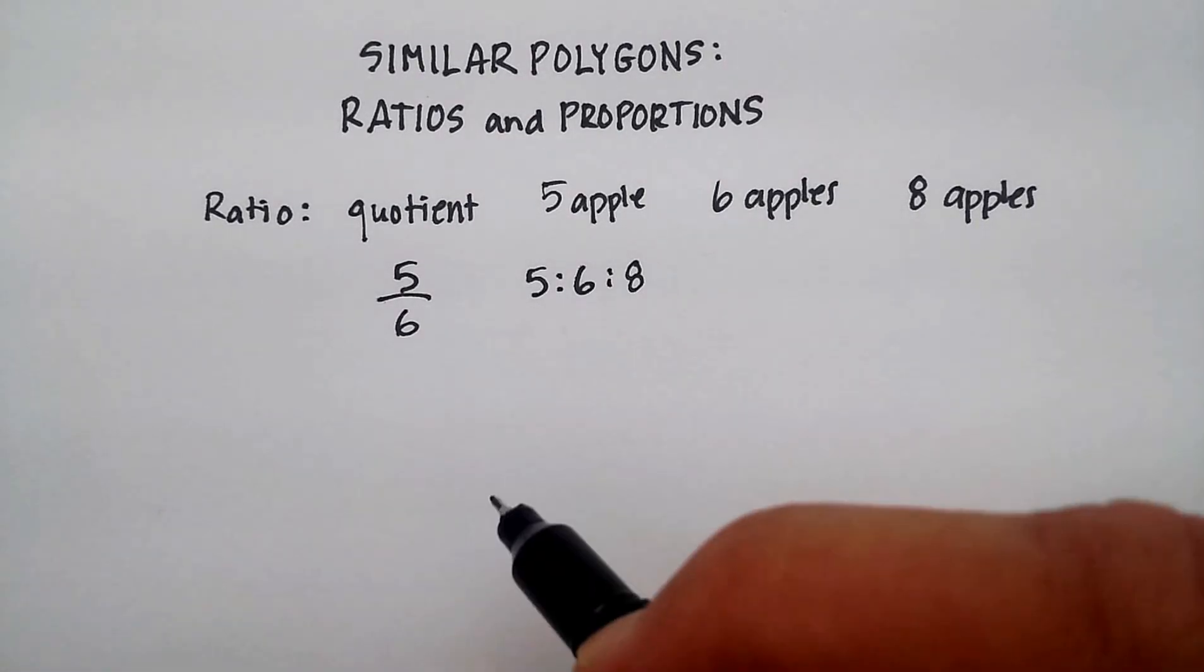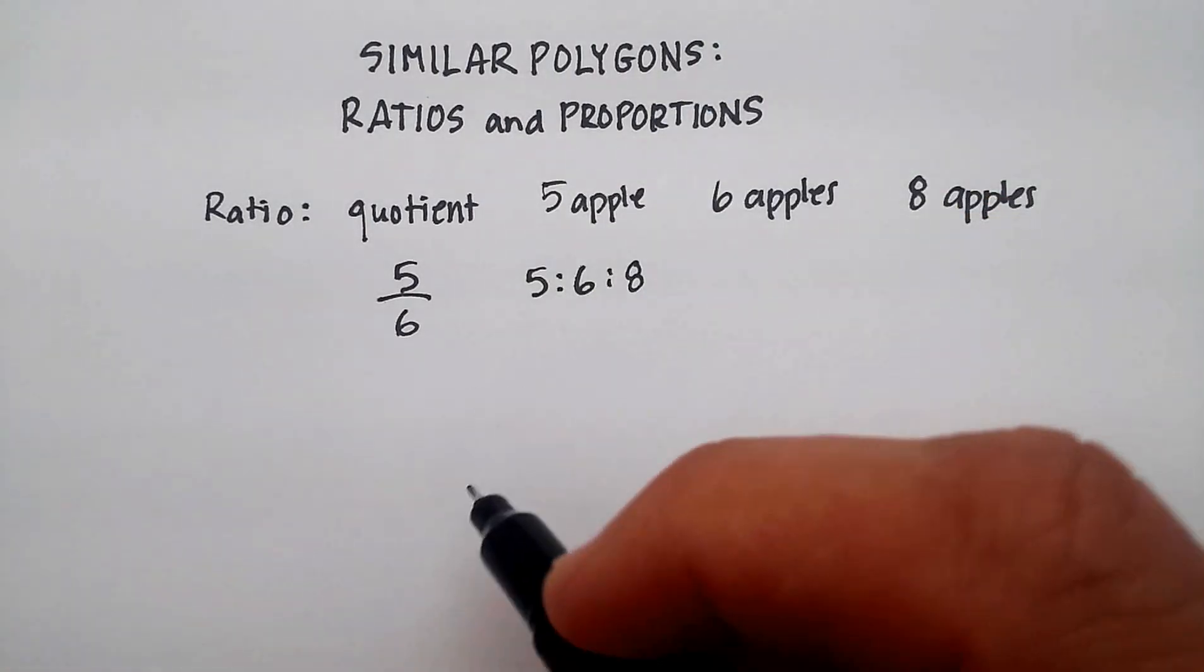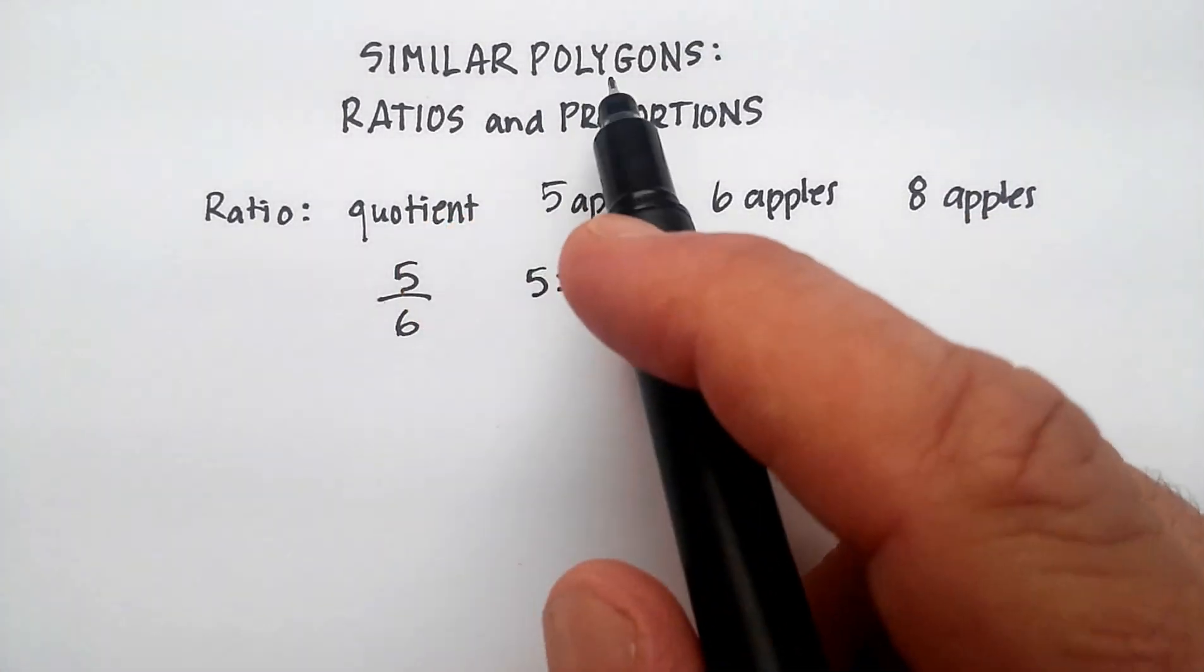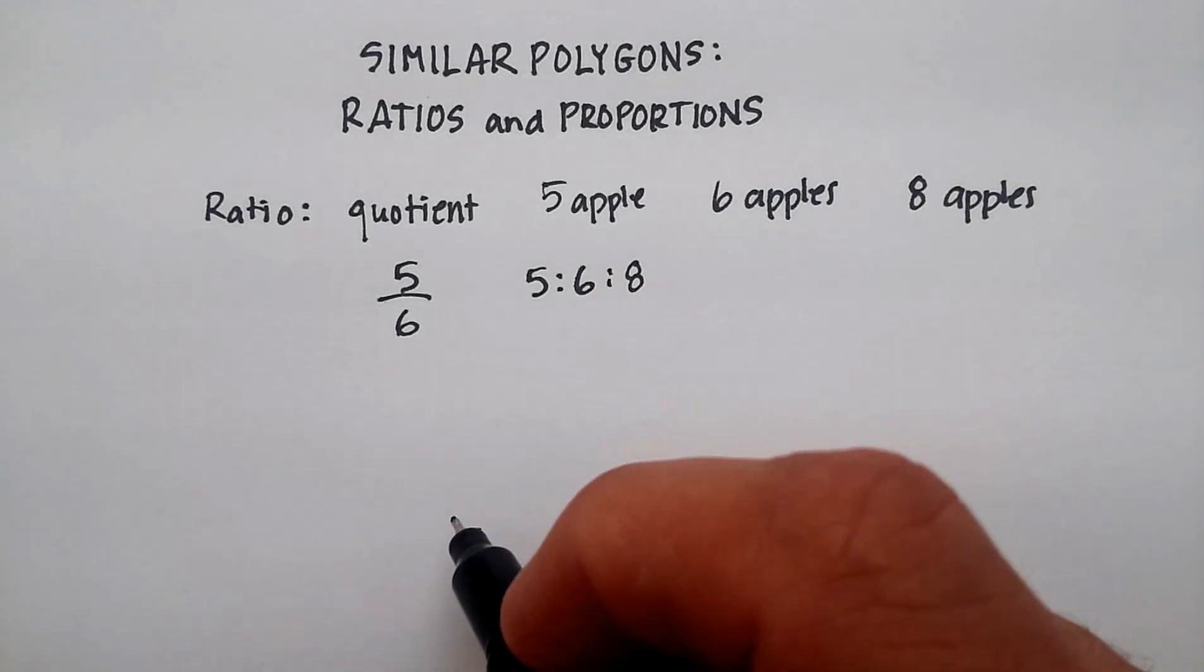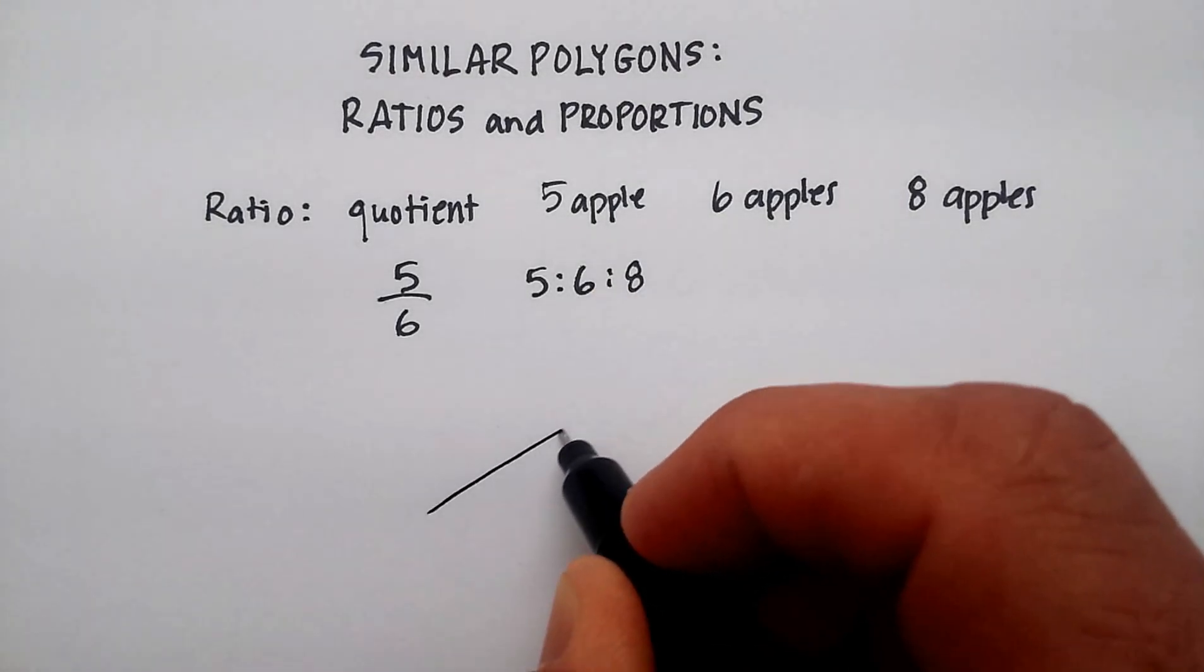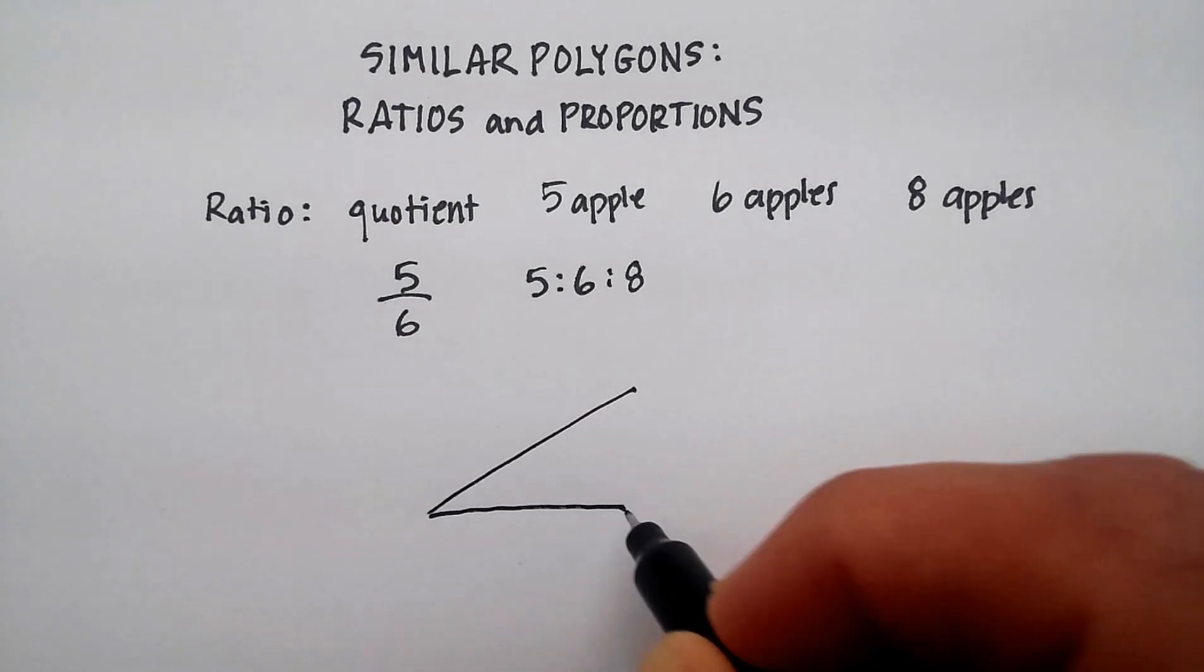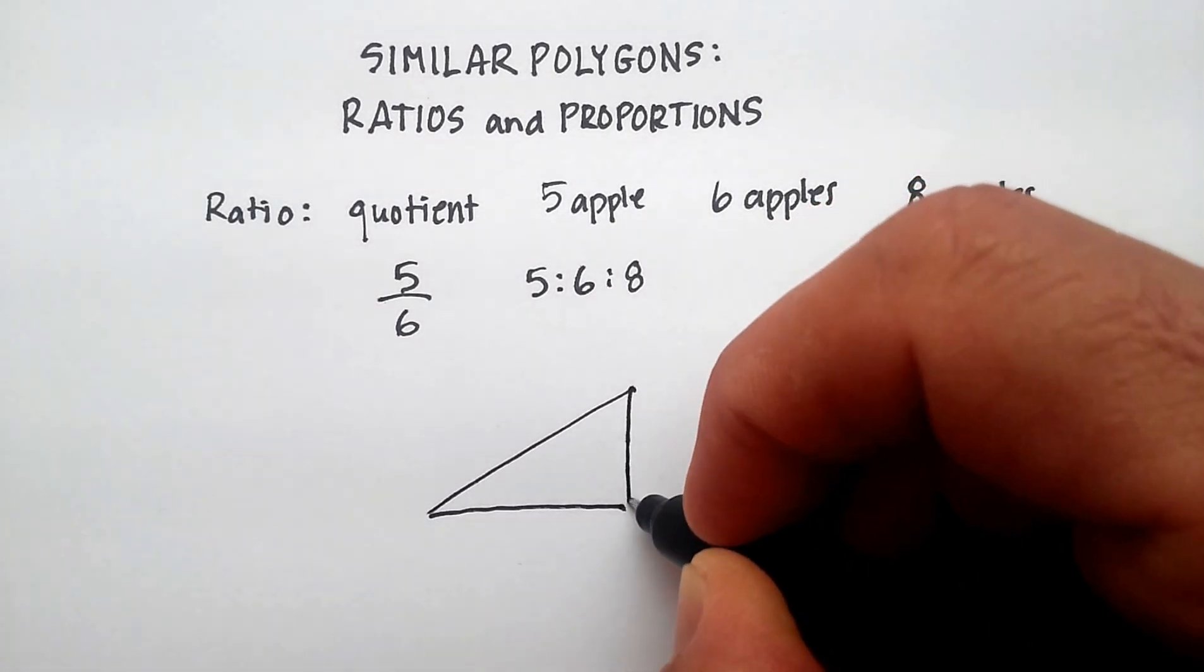Now, let's go ahead and see what it would look like in a polygon problem. Again, polygon, just a many-sided, poly meaning many, many-sided figure. So let's say I had something like this. I have a triangle of some kind.